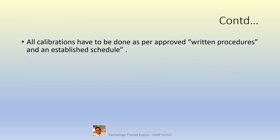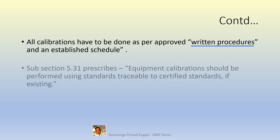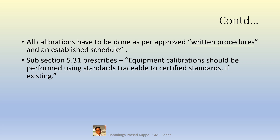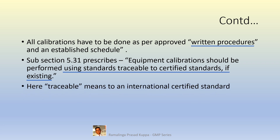All calibrations have to be done as per approved written procedures and an established schedule. There is no verbal communication in GMP — everything must be in writing. Subsection 5.31 prescribes equipment calibration should be performed using standards traceable to certified standards if existing. A certified standard is one that was certified by an authorized agency with a certificate of calibration and validity. Equipment must be calibrated with established authorized agencies like NIST or NPL, and traceable means to an international certified standard.